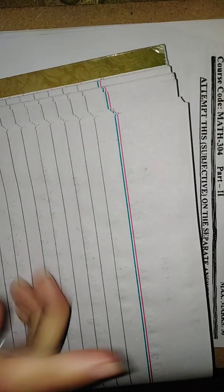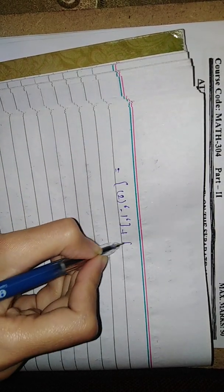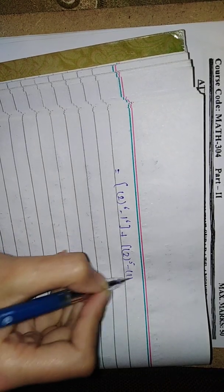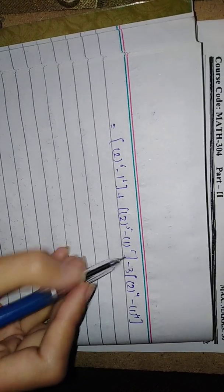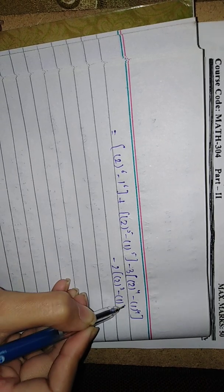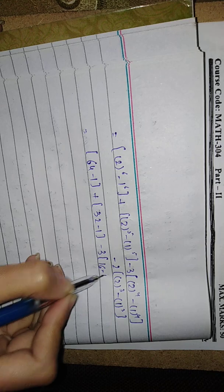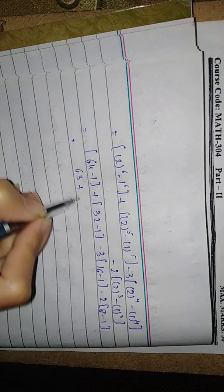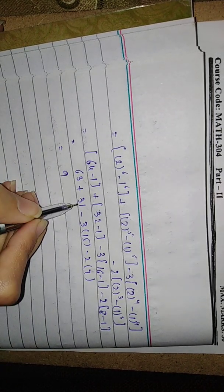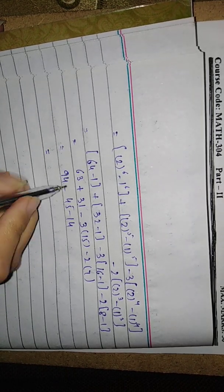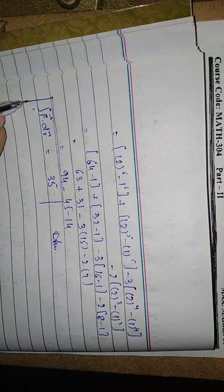2 to the power 6 minus 1 to the power 6 plus 2 to the power 5 minus 1 to the power 5 minus 3 times (2 to the power 4 minus 1 to the power 4) minus 2 times (2 cubed minus 1 cubed). This will be 64 minus 1 plus 32 minus 1 minus 3 times 15 minus 2 times 7. We have 63 plus 31 minus 45 minus 14. Calculating this, we get 35 as our answer. The value of integral f dot dr is 35. This is our answer.